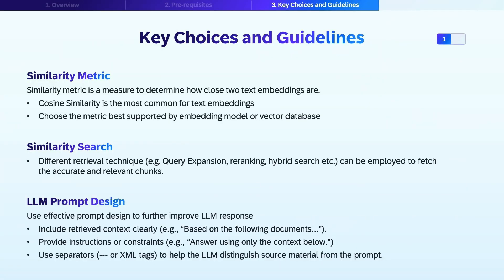Now let's discuss key decisions that impact the performance and utility of your AI applications. A similarity metric provides a numeric measurement to understand how semantically close two vectors are. There are various similarity metrics; cosine similarity is the most common one. However, you should use the measure best supported by your embedding model or vector database. Similarity search is the step where we look for relevant content from the vector database. There are several techniques — for example, query expansion, ranking, re-ranking, and hybrid search — which can be employed to improve retrieval results. Another important factor in quality of response is LLM prompt design in order to ground results on the added context.